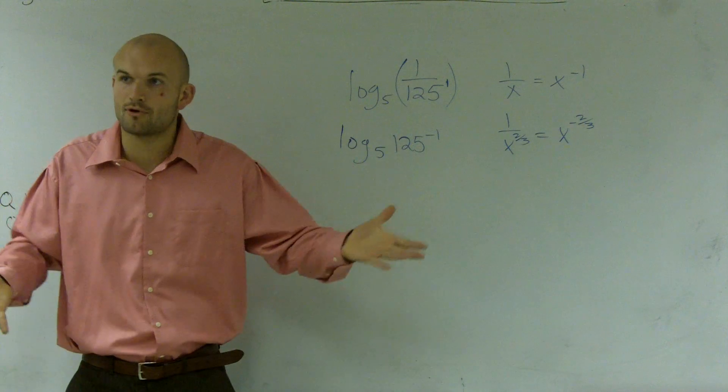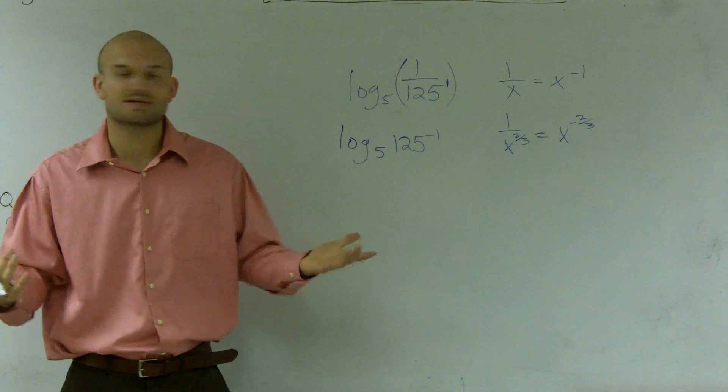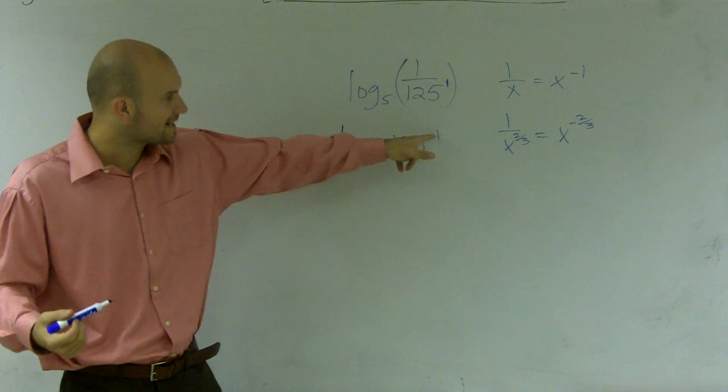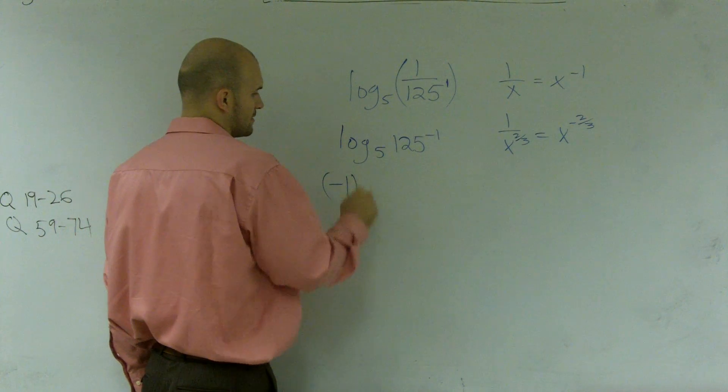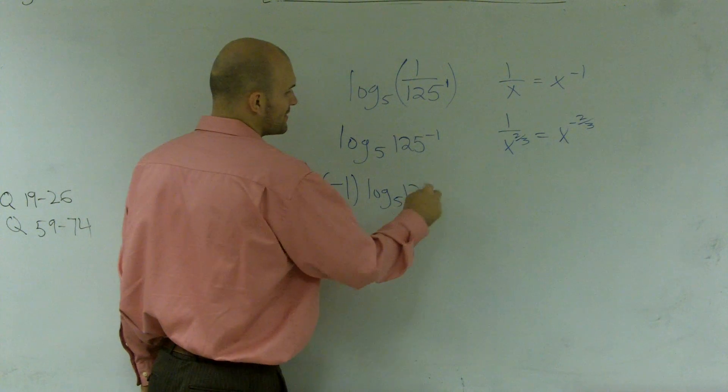So now, why is this so important? Because, again, this brings us to the rule that we want to use. I can now bring my negative 1 in front, and therefore I get log base 5 of 125.